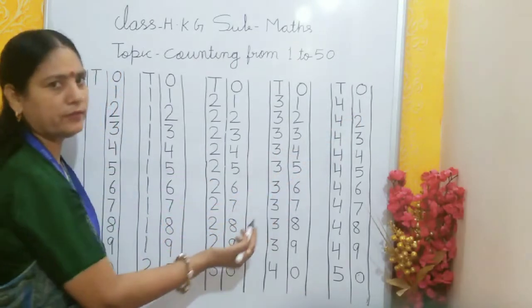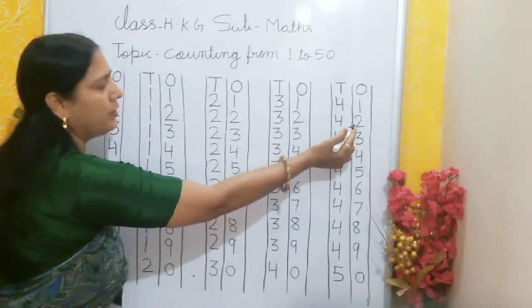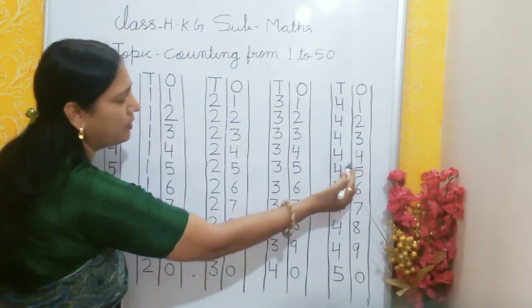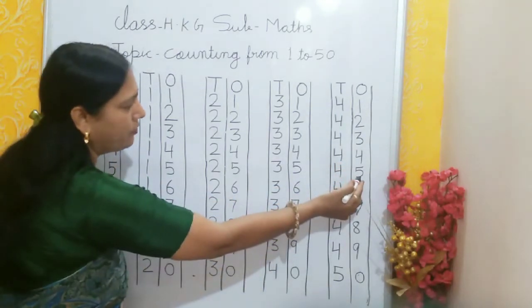4, 1, 41. 4, 2, 42. 4, 3, 43. 4, 4, 44. 4, 5, 45.